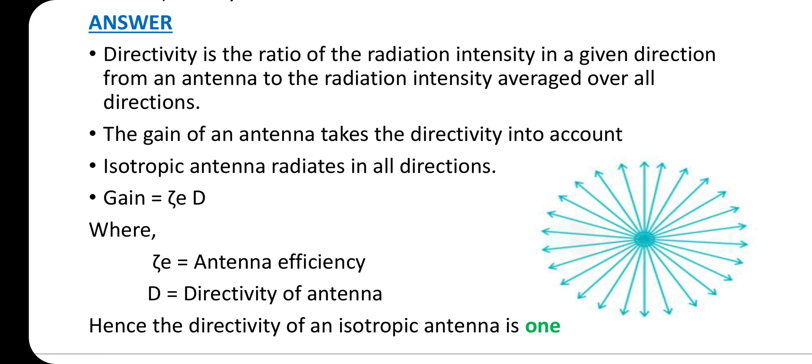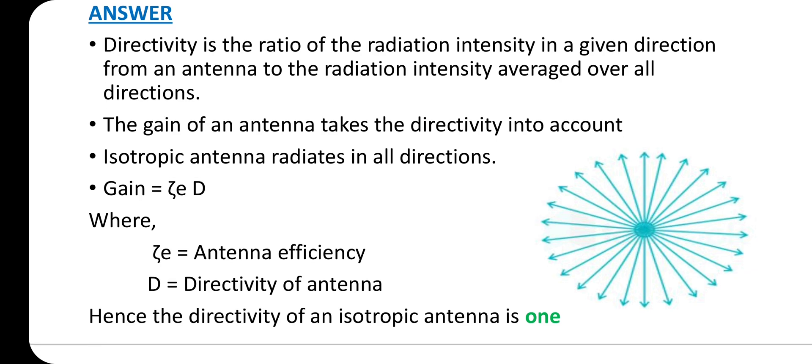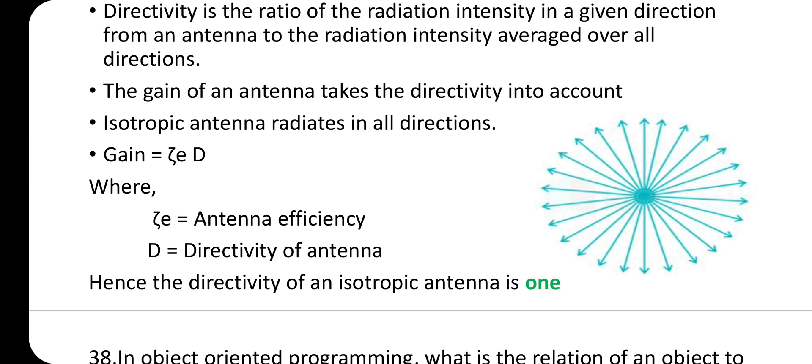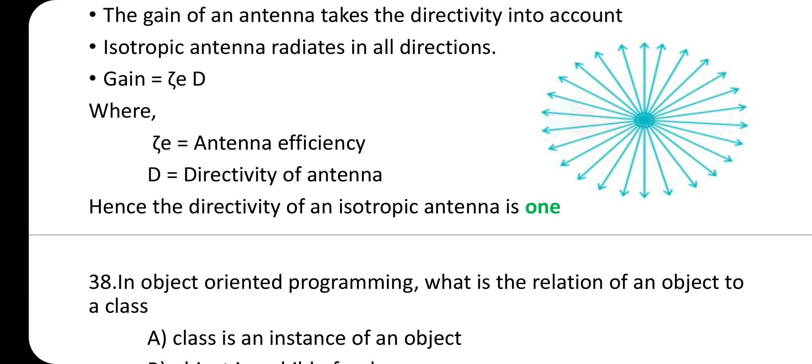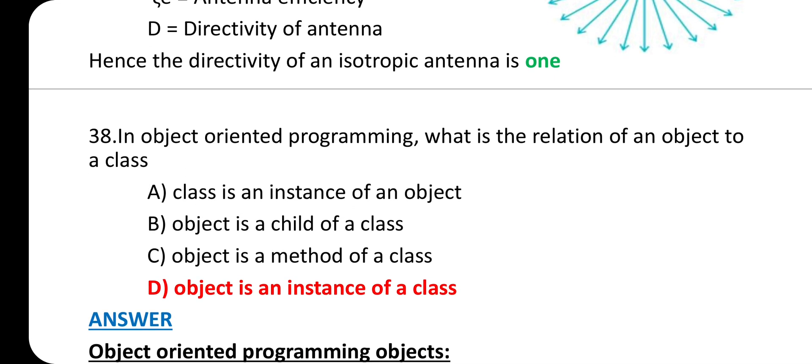Directivity is the ratio of radiation intensity in a given direction from an antenna to the radiation intensity averaged over all directions. The gain of an antenna takes directivity into account. Isotropic antenna radiates in all directions. For gain G = η_e × D, where η_e is antenna efficiency and D is directivity. Hence, the directivity of an isotropic antenna is 1.